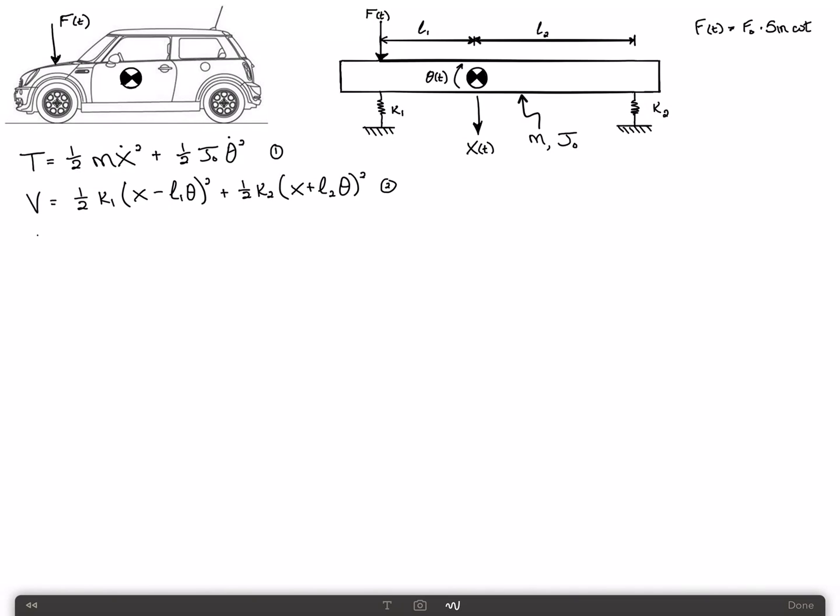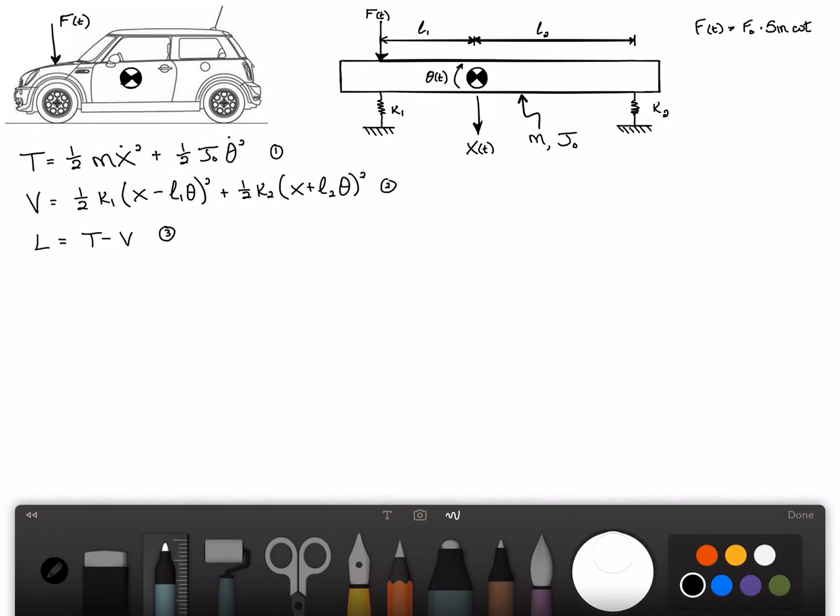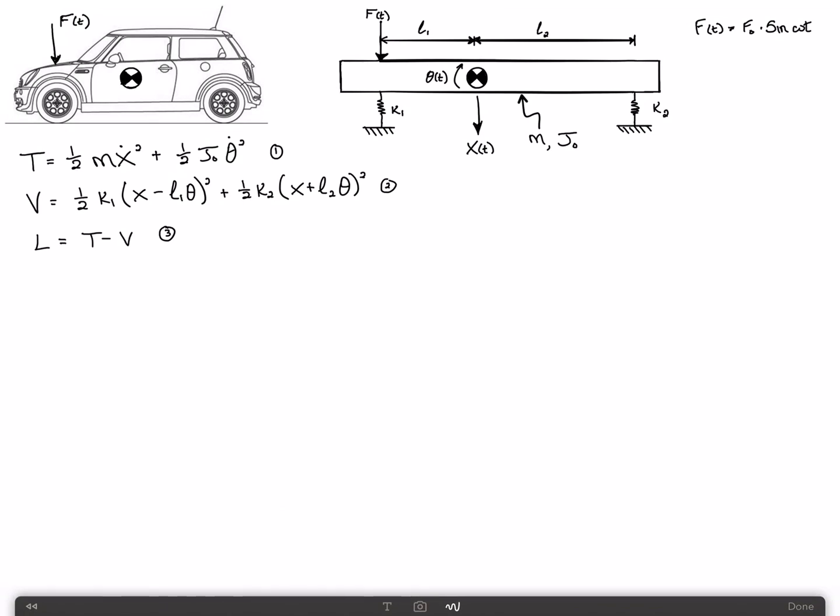Now the Lagrangian can be written L equals T minus V. We'll call that equation 3.